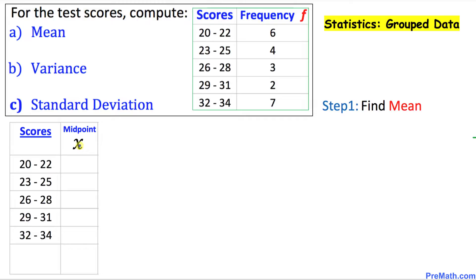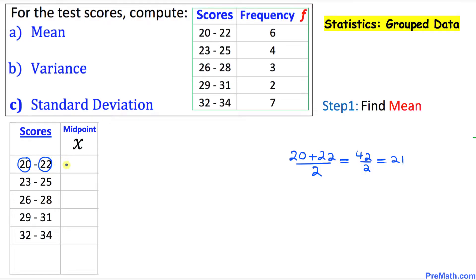In the second column we are going to find the midpoint of these grouped scores, represented by x. To find the midpoint, let's look at 20 and 22: we put down 20 plus 22, divided by 2. So 20 plus 22 is 42, divided by 2 equals 21. The midpoint for this first score is 21.